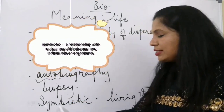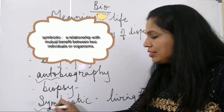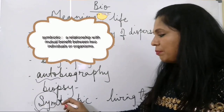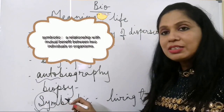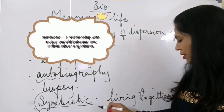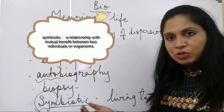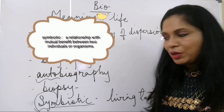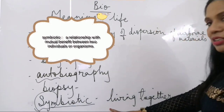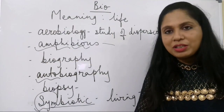Symbiotic — sym is a root word meaning similar or same. Symbiotic means living together, and it can mean mutualistic as well. So symbiotic refers to creatures that are living together.